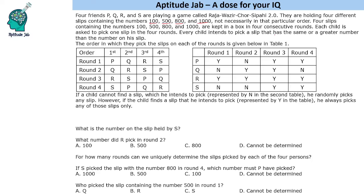We have round 1, 2, 3, 4. Each child picks one slip per round, and every child intends to pick a slip that has the same or a greater number than the number on their own slip. For example, if P has slip number 500, P will pick either 500, 800, or 1000 — not 100. If someone has 800, they will pick 800 or 1000. The intention is to pick the same or a greater number. This table gives the order in which they pick slips each round: round 1 is P, Q, R, S.